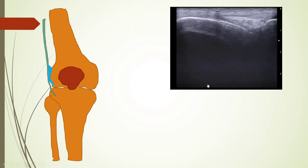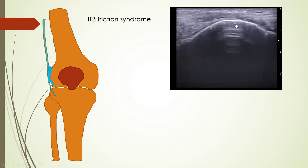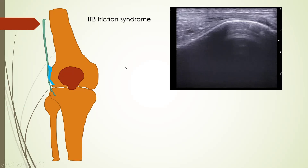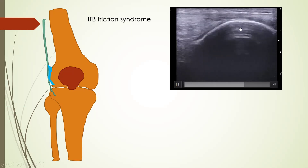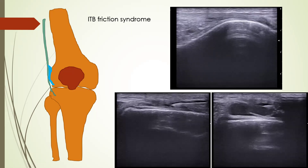Next is iliotibial band friction syndrome. The iliotibial band is a lateral structure that attaches over the Gerdy's tubercle of the tibia. Friction between the iliotibial band and the lateral femoral condyle leads to fluid and edema between the band and the condyle. It occurs in runners and cyclists involved in constant flexion-extension of the knee. In this video we can see fluid deep to the iliotibial band between it and the lateral femoral condyle. A steroid injection can be administered in the surrounding region to relieve symptoms.